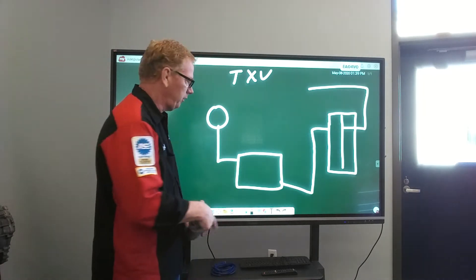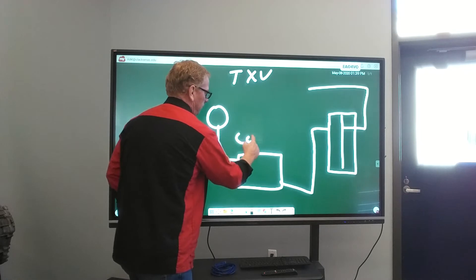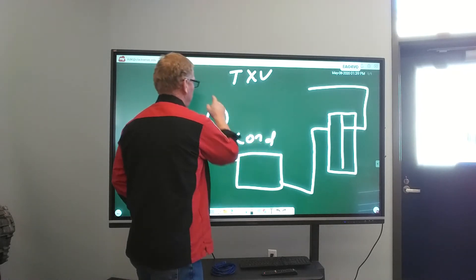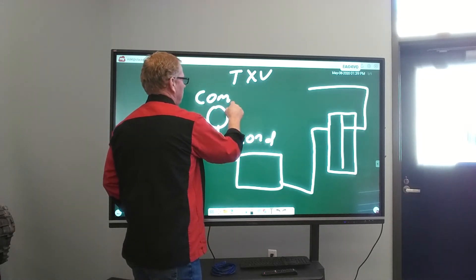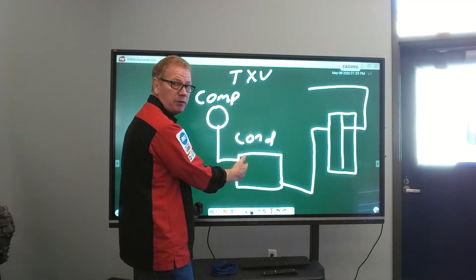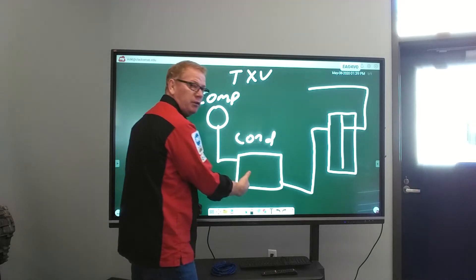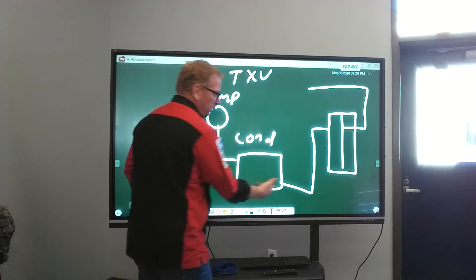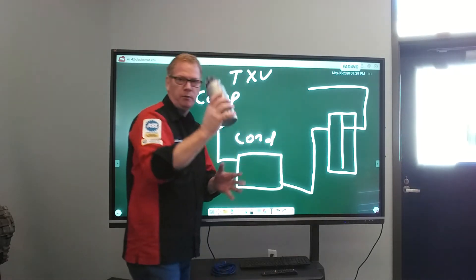So we got our AC condenser, AC compressor, compressor discharge line going to the condenser, high pressure gas converting to a high pressure liquid, liquid line feeding the receiver dryer.